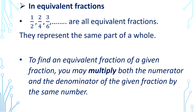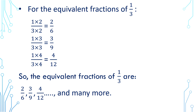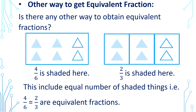To find equivalent fractions of a given fraction, you may multiply both the numerator and the denominator by the same number. For the equivalent fractions of 1 by 3: multiplying by 2 gives 2 by 6; multiplying by 3 gives 3 by 9; multiplying by 4 gives 4 by 12. So the equivalent fractions of 1 by 3 are 2 by 6, 3 by 9, 4 by 12, and many more.